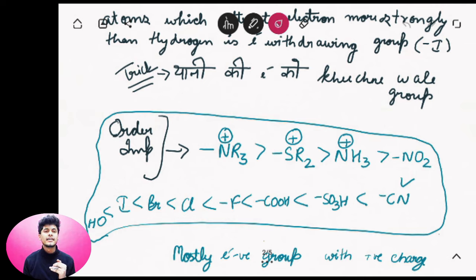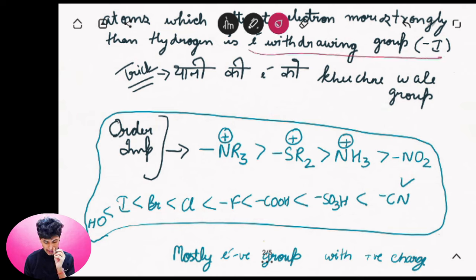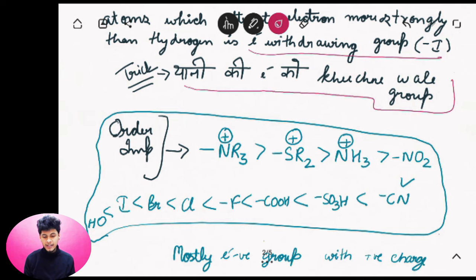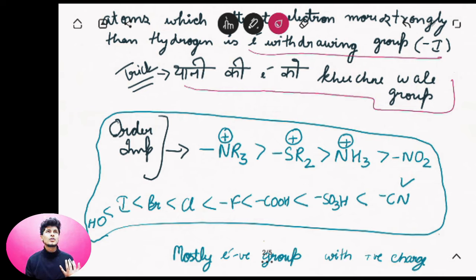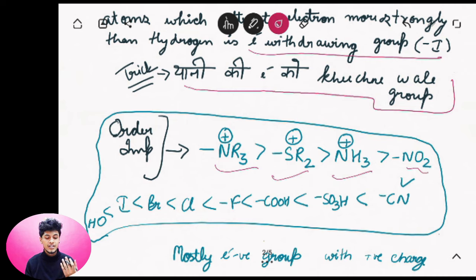Minus-I is the electron-withdrawing effect — the Minus Inductive Effect. Atoms which attract electrons more strongly than hydrogen are electron-withdrawing groups, showing Minus-I Effect. These groups are generally: NR₃, SR₂, NH₃, NO₂, F, O, Fluorine, Oxygen, Nitrogen, Chlorine — these all show Minus-I Effect.